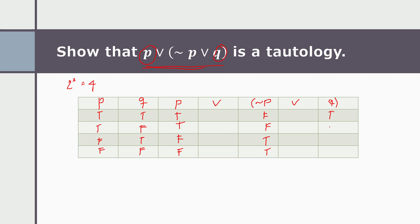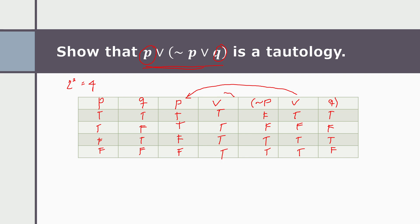We copy q: true, false, true, false. The disjunction of negation of p and q — if one statement is true, the result is true: true, true, true, and false. Then taking the disjunction of p with that result: true and true is true; true and false is true; false and true is true; false and false — but one is true so it is true. So this is always true, therefore this statement is a tautology.